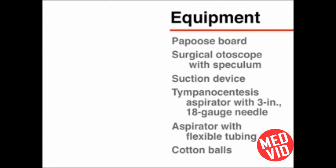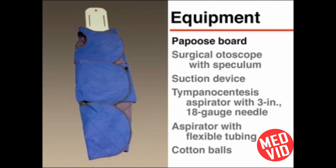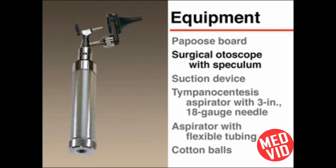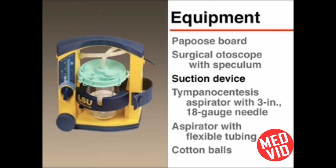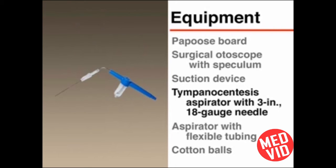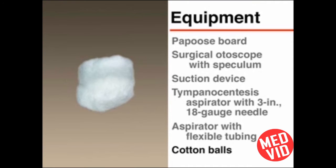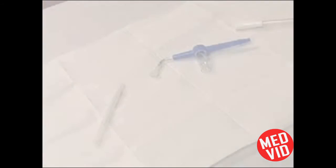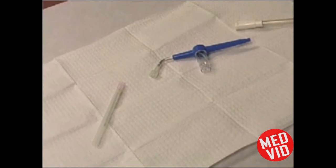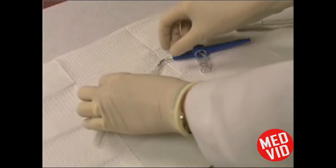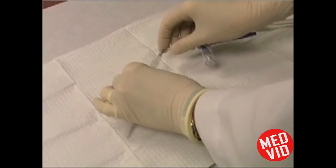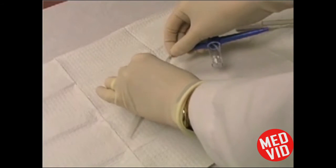The following equipment is necessary: a papoose board, a surgical otoscope with speculum, a suction device, a tympanocentesis aspirator with a 3-inch 18-gauge needle, a second aspirator with flexible tubing, and cotton balls. Attach the needle to the tympanocentesis aspirator, then attach the aspirator to the suction device.